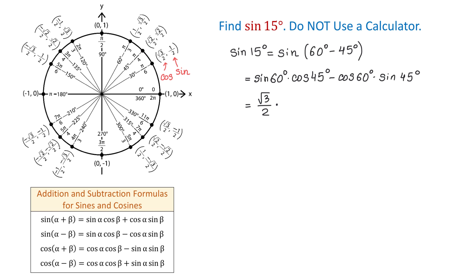So we will write square root of 3 over 2 times cosine of 45 degrees, which is square root of 2 over 2. Then we subtract: cosine of 60 degrees is 1 half, so we write 1 half times sine of 45 degrees, and sine of 45 degrees is square root of 2 over 2, so we multiply by square root of 2 over 2.